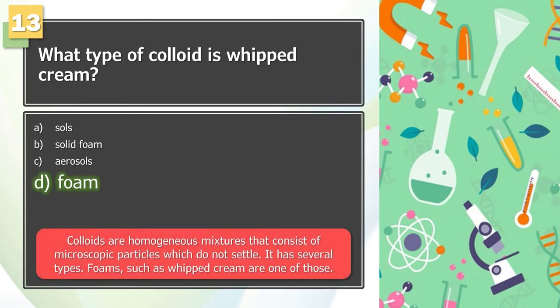The answer is D. Colloids are homogeneous mixtures that consist of microscopic particles which do not settle. It has several types. Foams, such as whipped cream, are one of those.